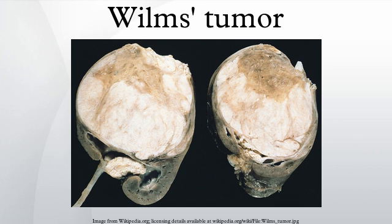Definitions of Stages. Stage 1: For Stage I Wilms Tumor, all of the following criteria must be met. Tumor is limited to the kidney and is completely excised. The surface of the renal capsule is intact. The tumor is not ruptured or biopsied prior to removal. No involvement of external or renal sinus lymph vascular spaces. No residual tumor apparent beyond the margins of excision. Metastasis of tumor to lymph nodes not identified.